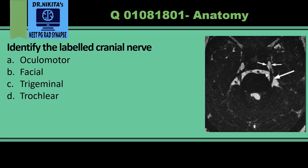In this image, there is an arrow pointing to this nerve. We see that this nerve is a thick nerve — it is not a thin nerve. Second, it is arising from the pons. This is the pons, which is in front of the fourth ventricle, and this is the cerebellum.